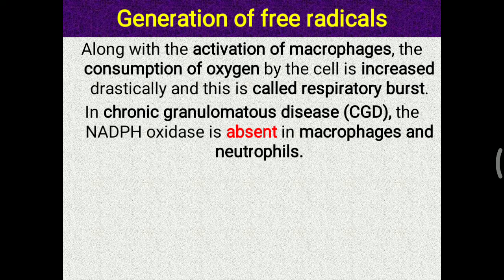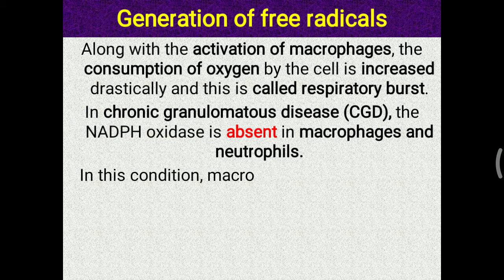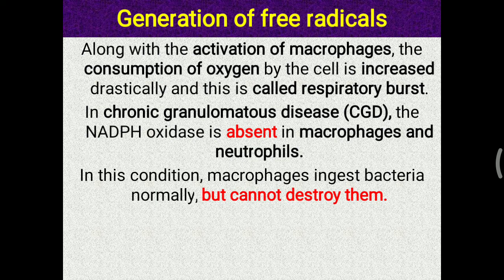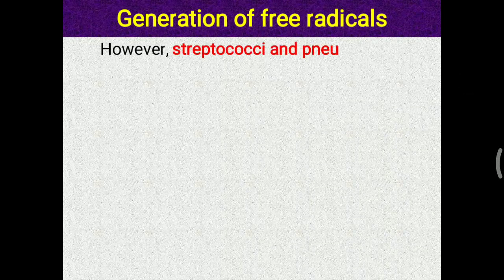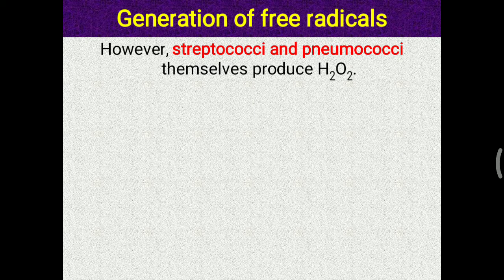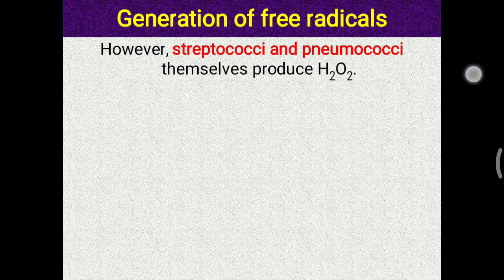In chronic granulomatous disease, the NADPH oxidase enzyme involved in respiratory burst is absent in macrophages and neutrophils. This leads to the condition where macrophages ingest bacteria normally but cannot kill or destroy them — a very dangerous situation. However, an interesting fact is that streptococci and pneumococci themselves produce H2O2, so macrophages can convert this H2O2 into hypochlorous acid using myeloperoxidase, even without NADPH oxidase.